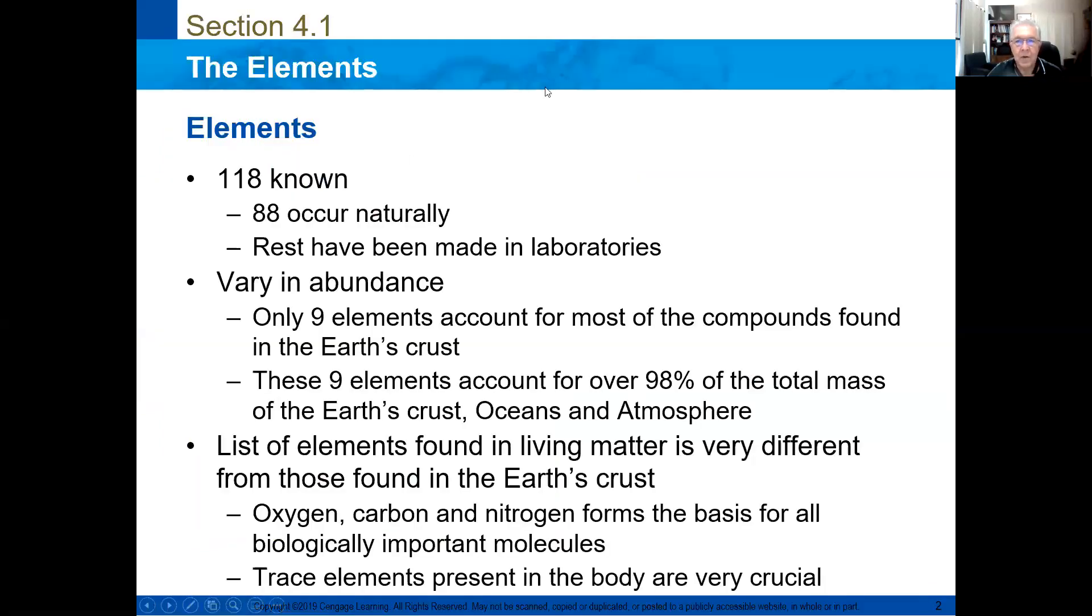In the periodic table, until this moment, we know 118 elements. 88 of them are in the environment. The rest of the elements are produced in the labs. Only nine elements are the most compounds that we found in the earth. Nine elements are over 98% of the total mass of the earth crust, the oceans, and the atmosphere.